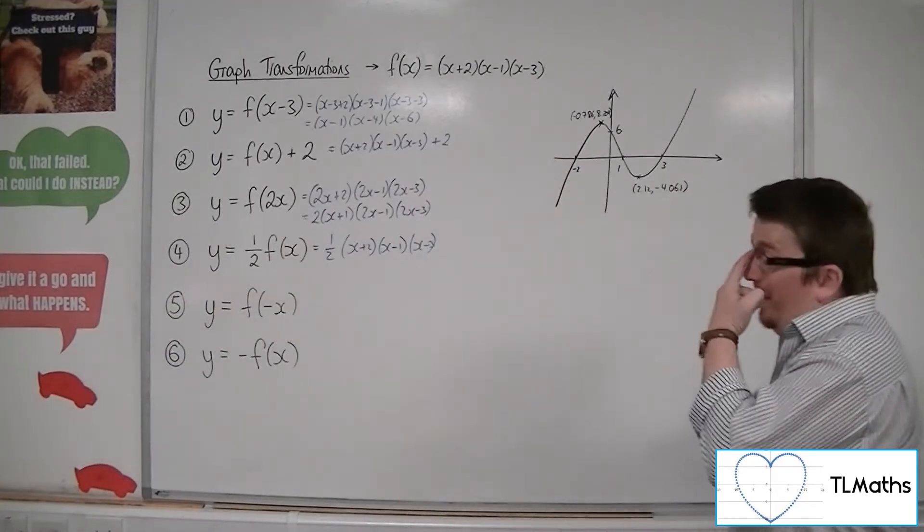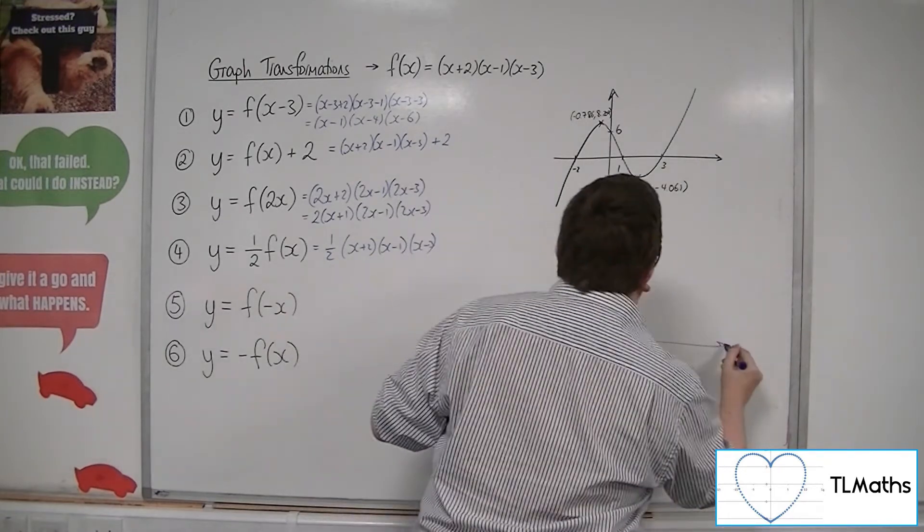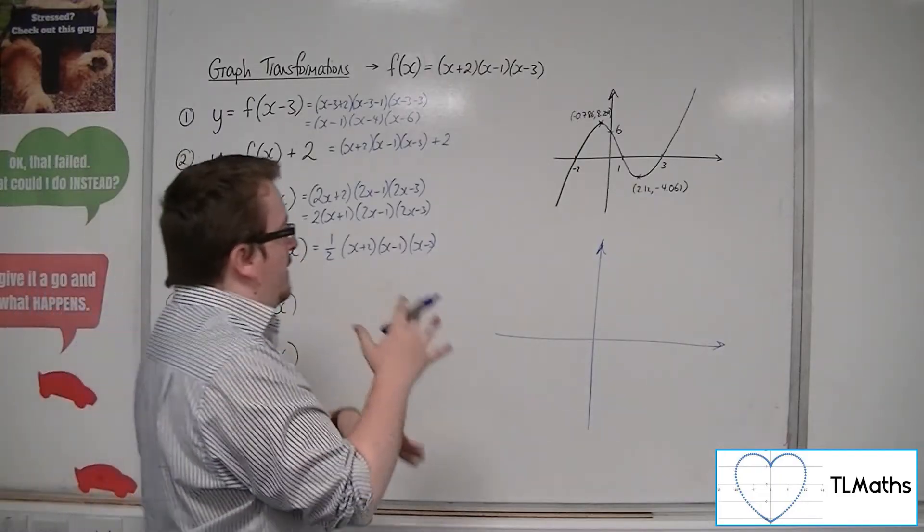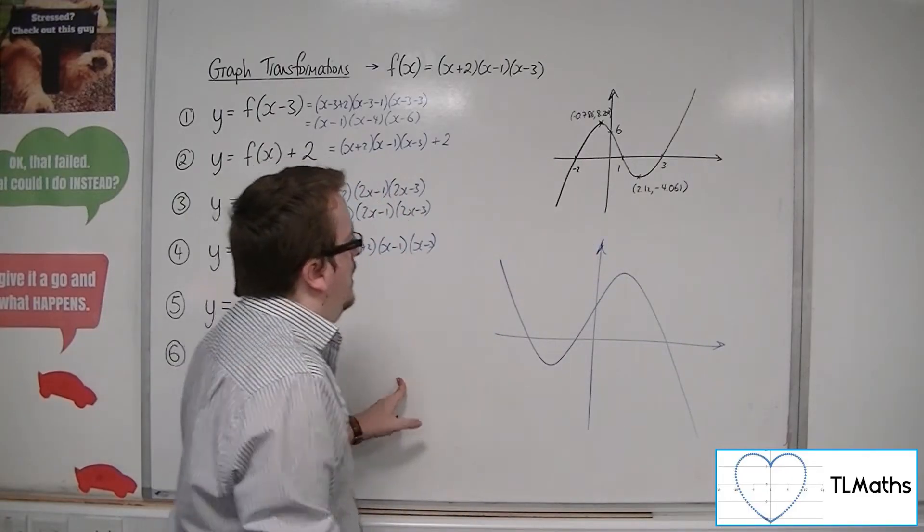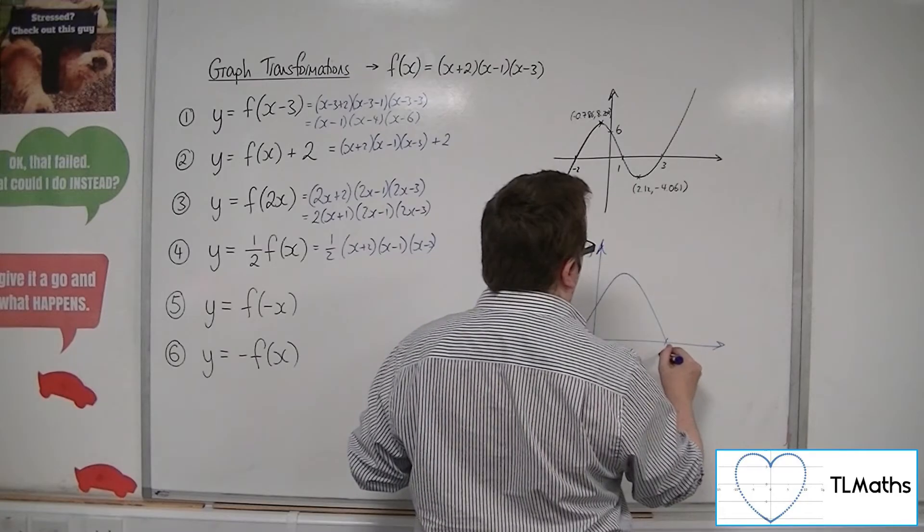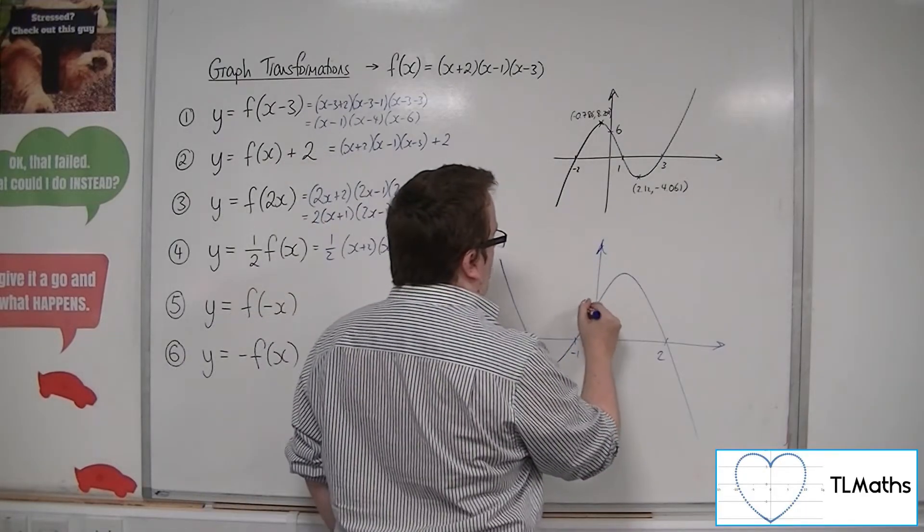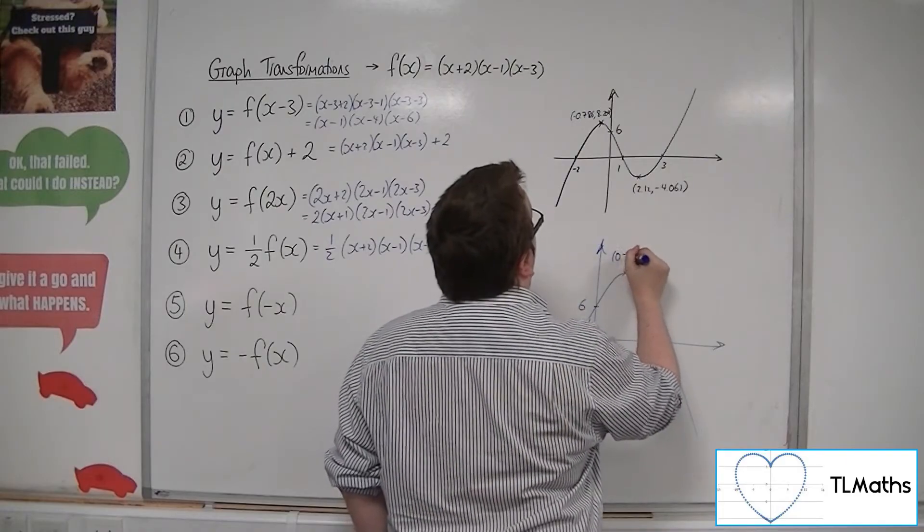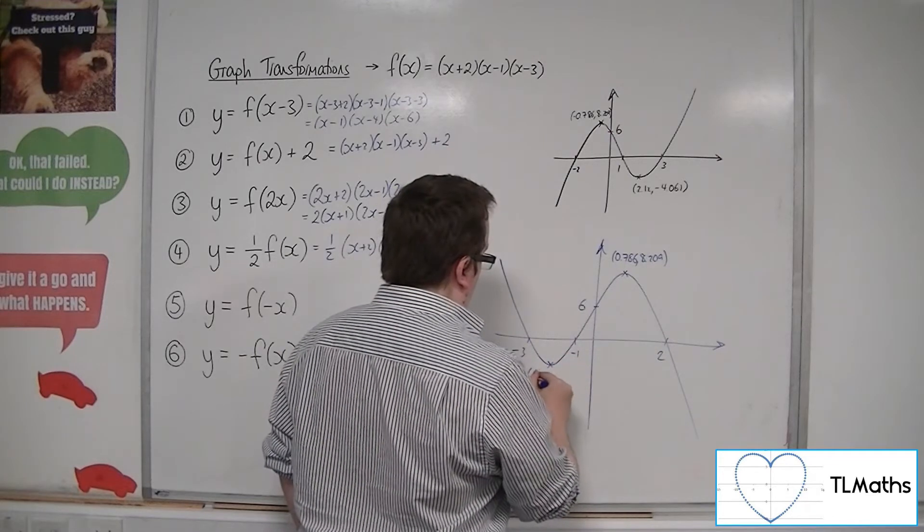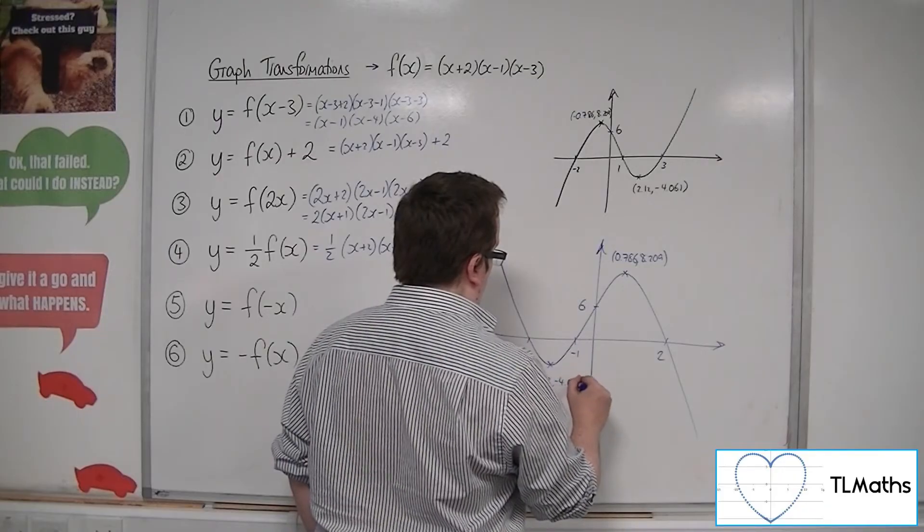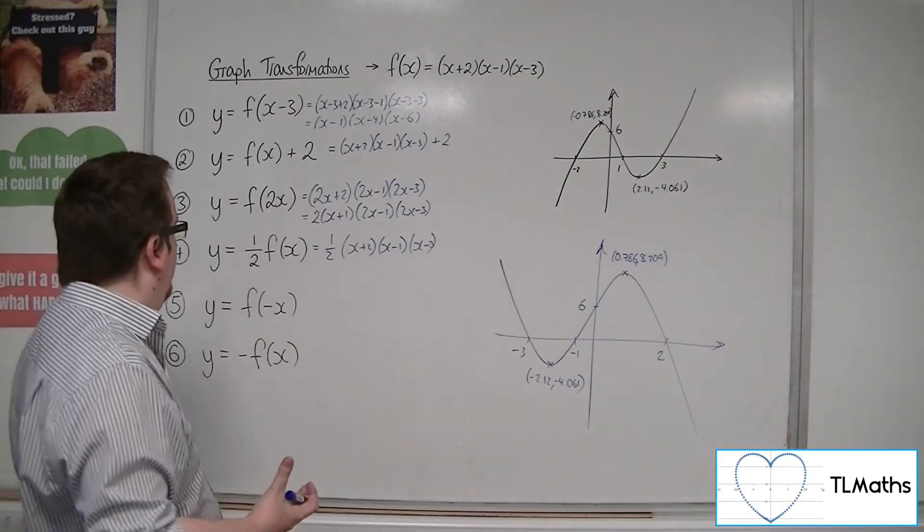Let's just pop the half in front of those brackets, and that gives you the equation of the new curve. Now, you've got f(-x), so that's a reflection in the y-axis. Now, these can always be a little bit awkward to draw, because you're kind of doing it around the other way. So, something like that, where we have 2, -1, and -3. That would still be 6. This point would be (0.786, 8.209), and that one will be (-2.12, -4.061). And that's the curve reflected in the y-axis.